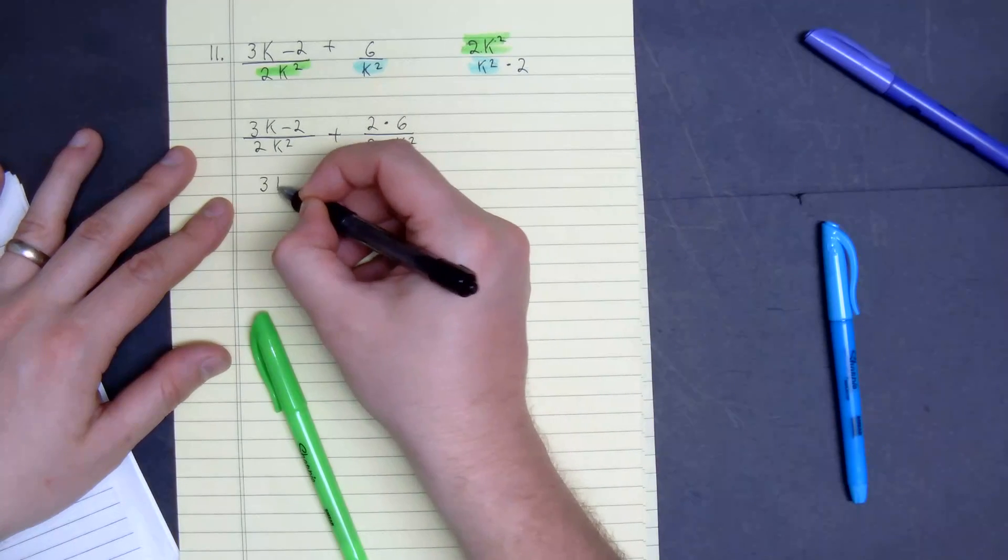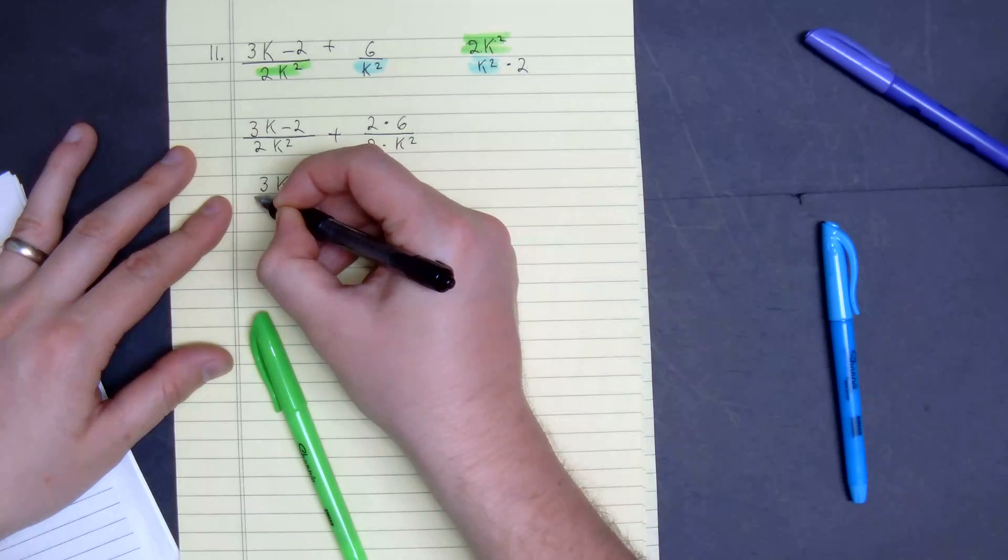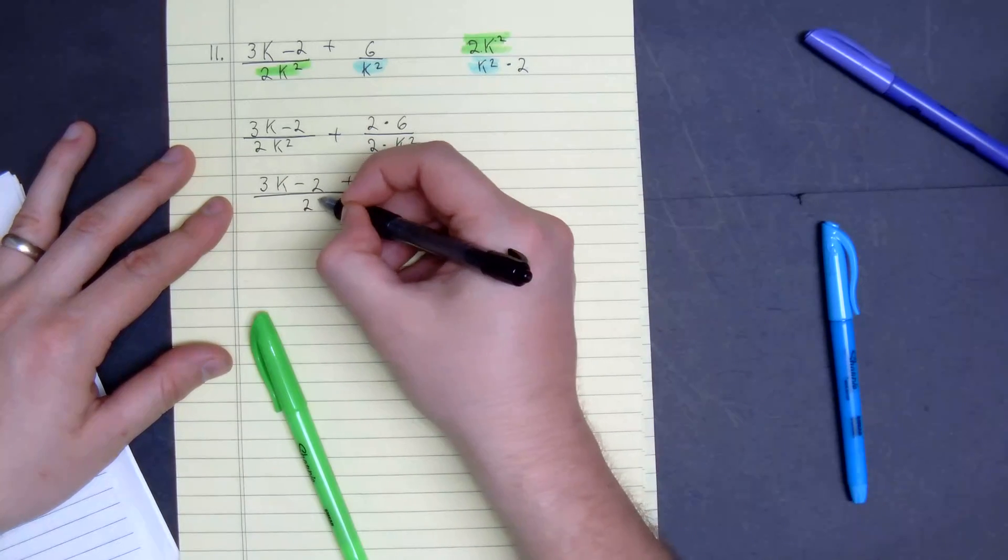We get 3k minus 2 plus 12, and then I'm just going to make a common denominator of 2k squared.